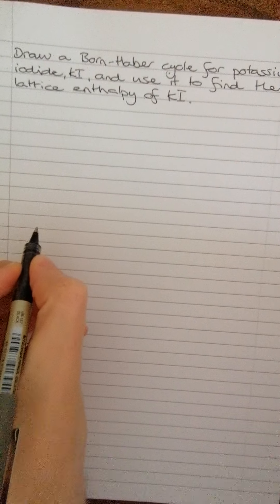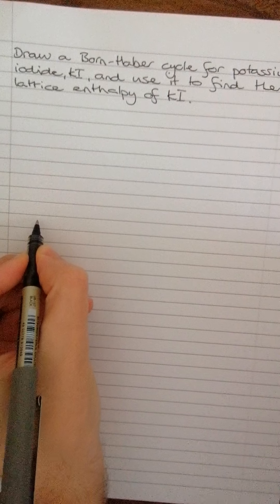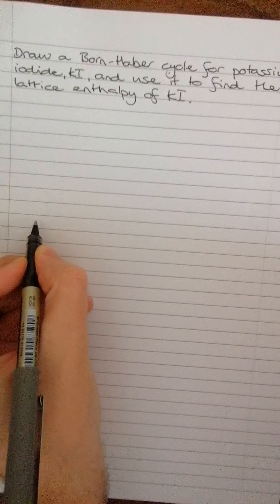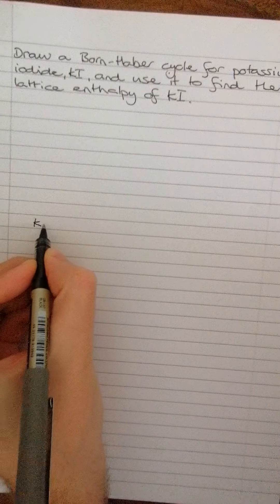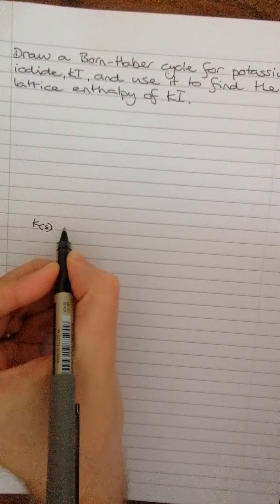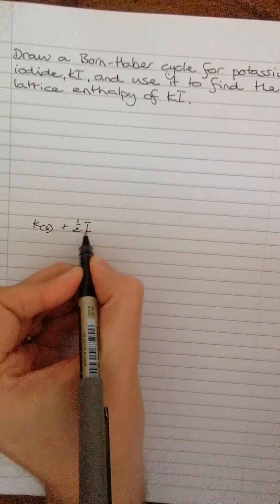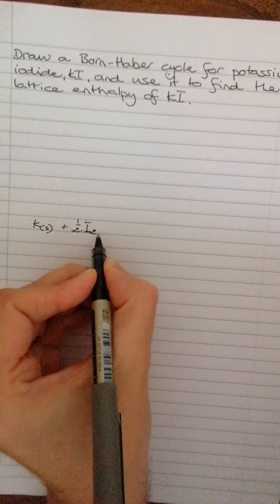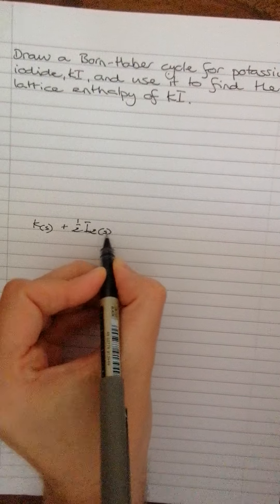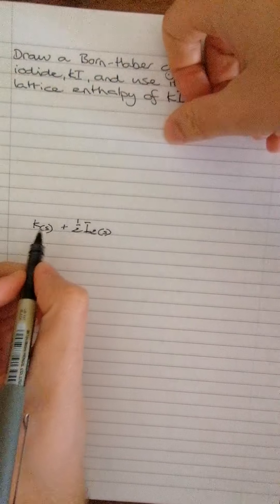So for me, you've always got to start the Born-Haber cycle with the elements in their standard state. So we've got K solid plus a half I2, because it's KI. Element in its standard state, iodine, is I2 solid.